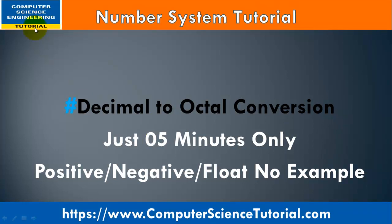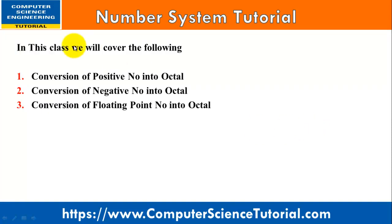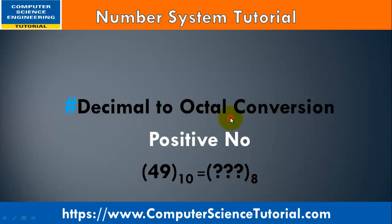Good morning, welcome to the Computer Science Tutorial channel. In this tutorial we will learn how to convert decimal numbers into octal numbers with simple and easy examples. As you know, we can classify decimal numbers into three categories: positive numbers, negative numbers, and floating point numbers. I will explain how to convert each type into octal.